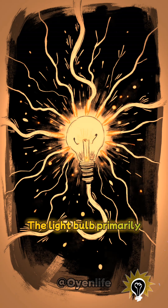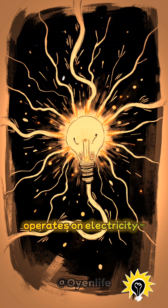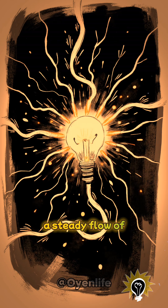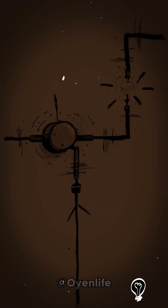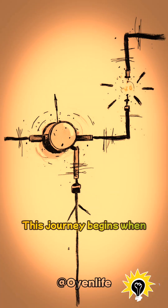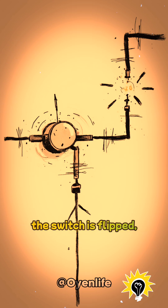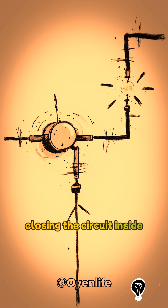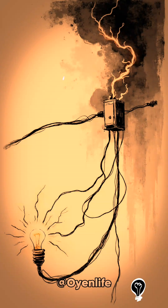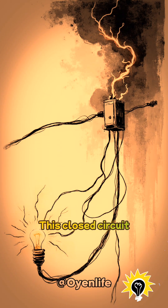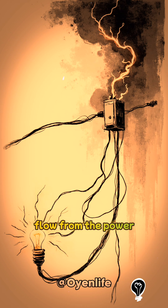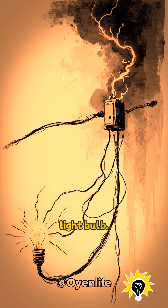The light bulb primarily operates on electricity, a steady flow of electrons. This journey begins when the switch is flipped, closing the circuit inside your home. This closed circuit allows electricity to flow from the power source, through wires, and straight into your light bulb.